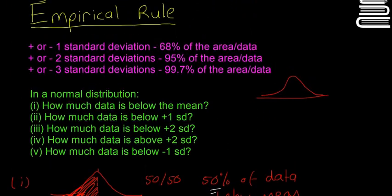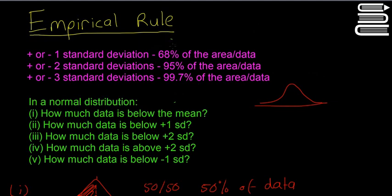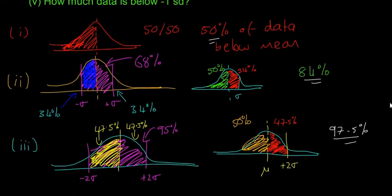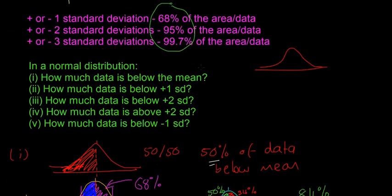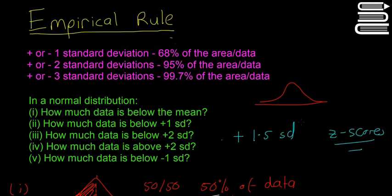So those are a few simple rules. We need to know the empirical rule numbers, and we need to know that the bell curve is symmetrical, and we can solve all sorts of problems about how much data is below and above certain points. That's it for basic empirical rule questions. After this, we're going to look at questions where instead of plus or minus one standard deviation, it's 1.5 standard deviations — and for that we need z-scores. We'll start with the standard normal distribution in the next video, which is a little bit different from the normal distribution but the same idea.